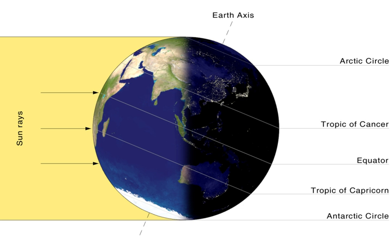At the June solstice, the subsolar point is further north than any other time, at latitude 23.44 degrees north, known as the Tropic of Cancer. Similarly, at the December solstice, the subsolar point is further south than any other time, at latitude 23.44 degrees south, known as the Tropic of Capricorn. The subsolar point will cross every latitude between these two extremes exactly twice per year.